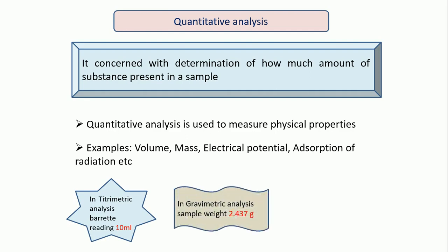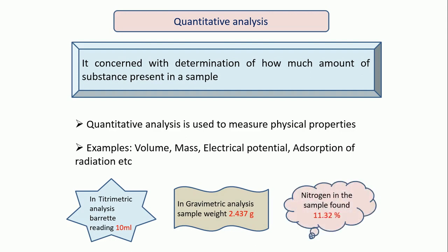Second example: suppose we are weighing the sample on a balance and its weight is 2.437 gram — then that is again a quantity, given in gram, and therefore it is quantitative analysis. Then suppose we are doing elemental detection from an organic compound and we found that nitrogen is 11.32% — so this percentage of nitrogen present in the given compound is again a quantity. Quantity means how much amount of that particular substance is present.